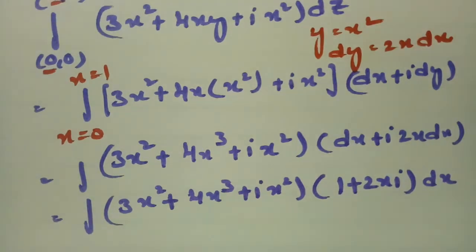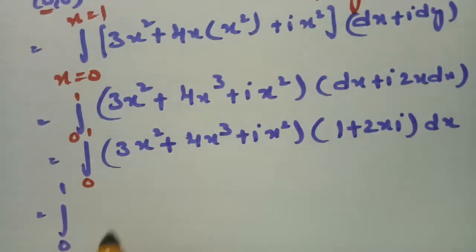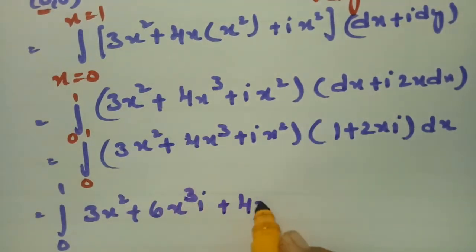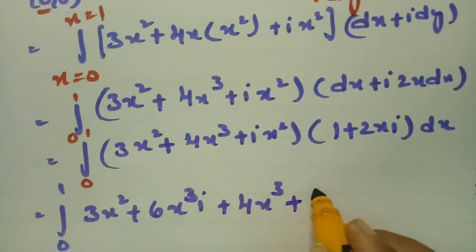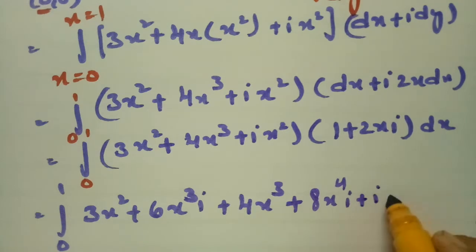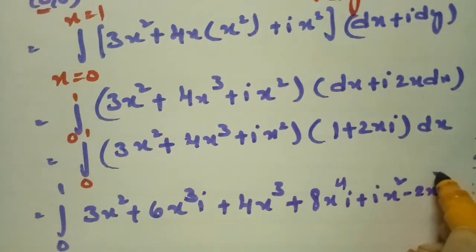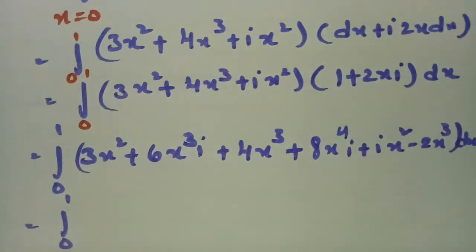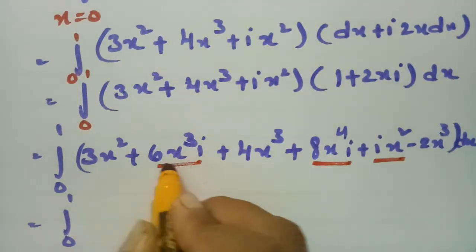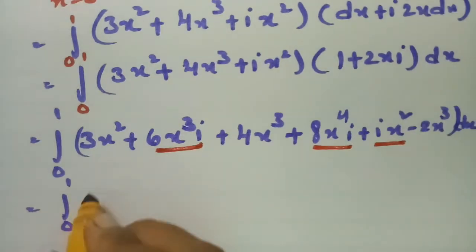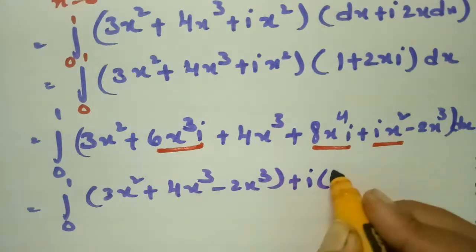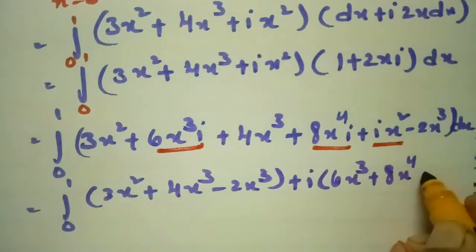With x limits from 0 to 1, multiplying through: 3x²·1 = 3x², 3x²·2xi = 6x³i, 4x³·1 = 4x³, 4x³·2xi = 8x⁴i, and i·x²·2x = 2x³·i² = −2x³. Separating real and imaginary parts: real part is 3x² + 4x³ − 2x³, imaginary part is 6x³ + 8x⁴ + x².